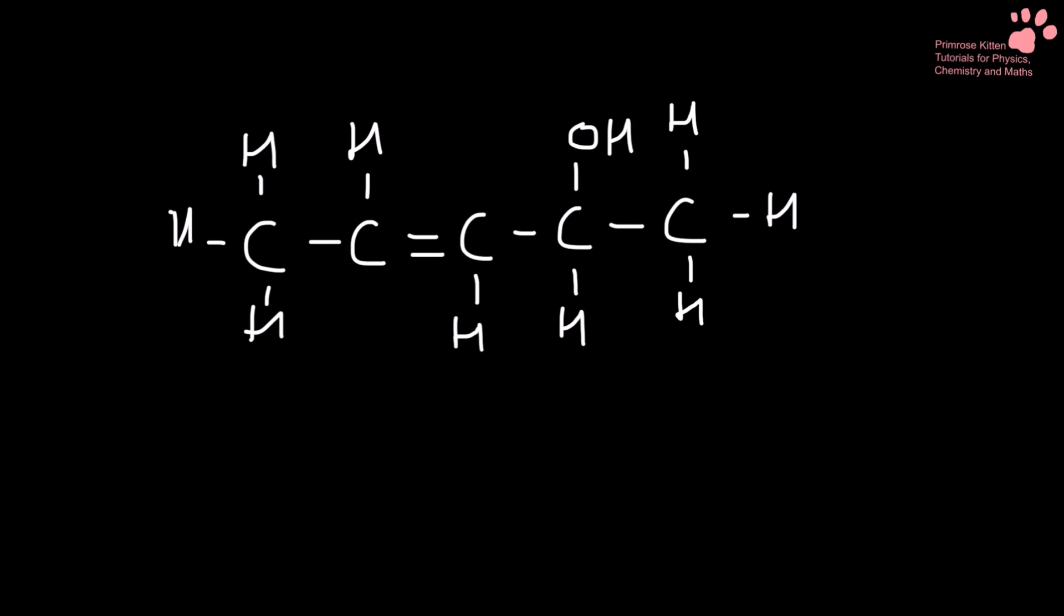When we're naming things in organic chemistry, we need to put the functional group with the highest priority at the end. Now here we have a double bond and here we have an alcohol group. The double bond is the one that needs to go at the end, which gives us a bit of a problem because we normally put the alcohols at the end.